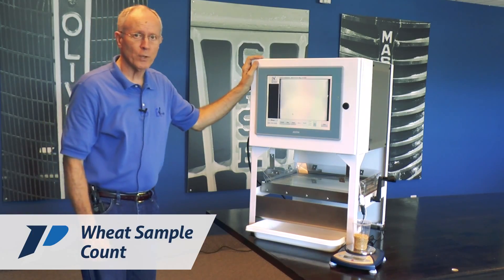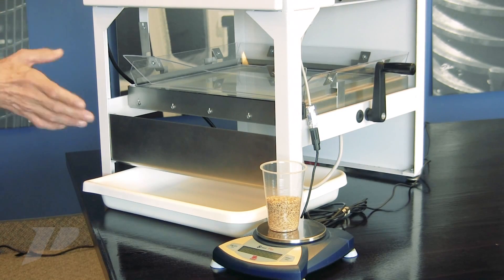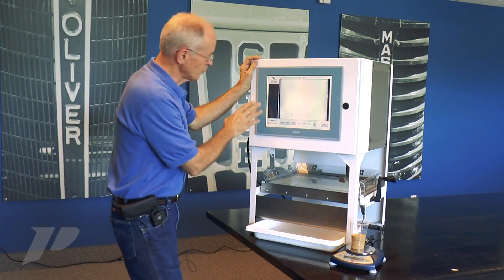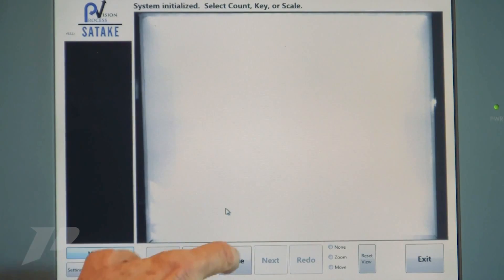I'd like to run a sample for you of wheat on the OptiCount lab. The scale weight will be taken automatically from the scale into the computer. System's been initialized. We know the recipe that we're on, so I'm going to click scale.